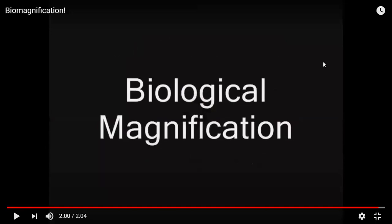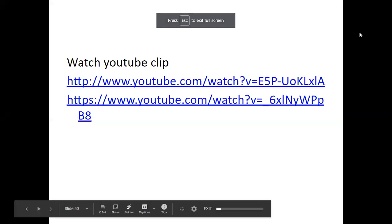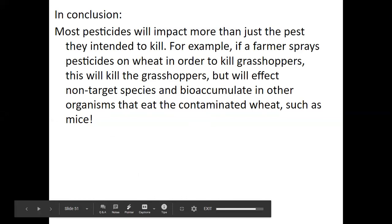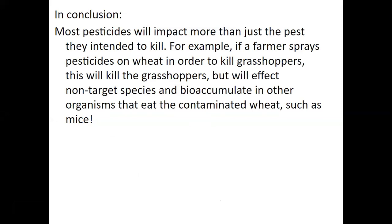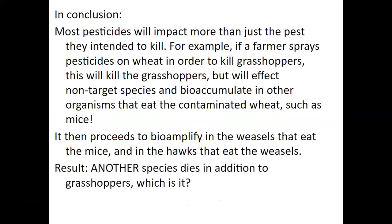That video shows the side effects of biological magnification quite clearly. In conclusion: pesticides impact more than just the target pest. Spray pesticide on wheat to kill grasshoppers — it kills grasshoppers, but it targets non-target species too. It accumulates in the mice that eat the wheat, then in the weasels that eat the mice, then in the hawks that eat the weasels. Therefore, hawks die in addition to grasshoppers — another non-target species lost because of bioamplification up the food chain.